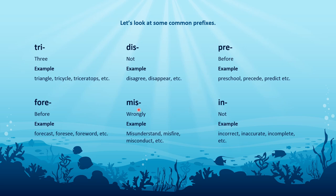Our next prefix is mis, which means wrongly: misunderstood, misfire, misconduct. If mis means wrongly, then misunderstand means you wrongly or incorrectly understood. And in, which means not: incorrect means not correct, inaccurate means not accurate, incomplete means not complete. These are just a few examples — there are a lot more prefixes and a lot more examples of each. Can you think of any others that fit these six prefixes, or any common prefixes I haven't included?